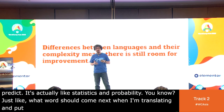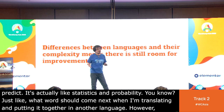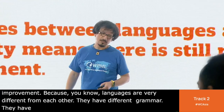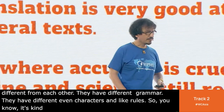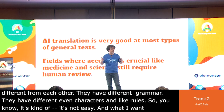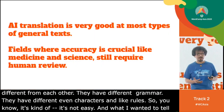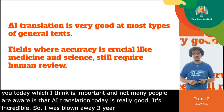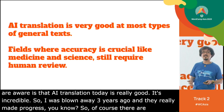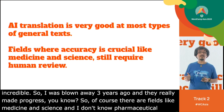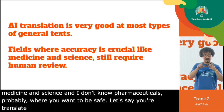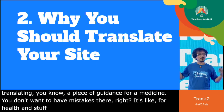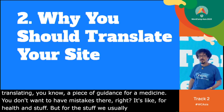There's still room for improvement because languages are very different from each other — different grammar, different characters and rules. But what I want to tell you today, which I think is important and not many people are aware of, is that AI translation today is really good, incredible. Of course, in fields like medicine, science, and pharmaceuticals, you want to be safe — you don't want mistakes when translating medical guidance. But for the stuff we usually translate, for regular sites, it's really incredible.